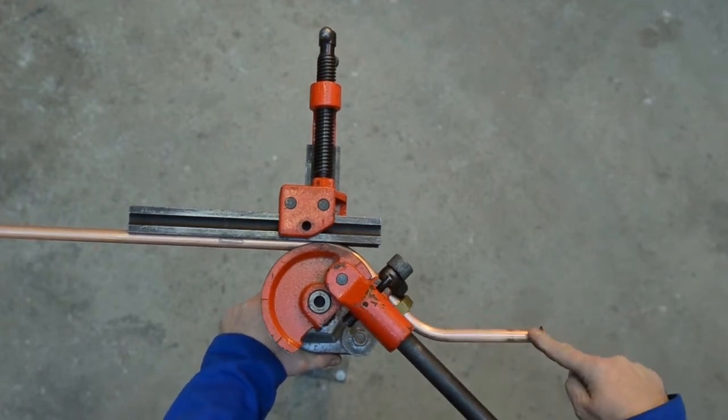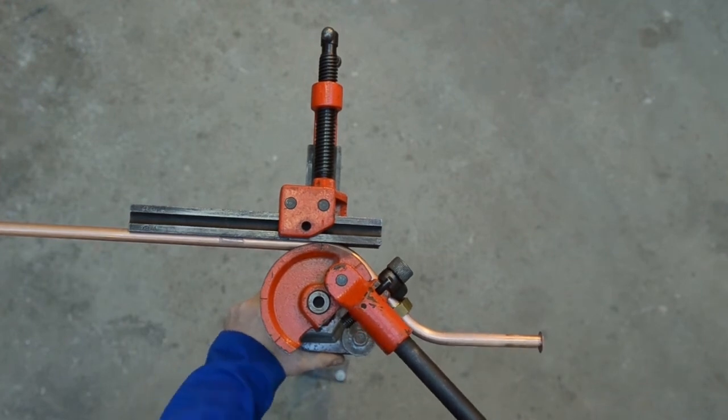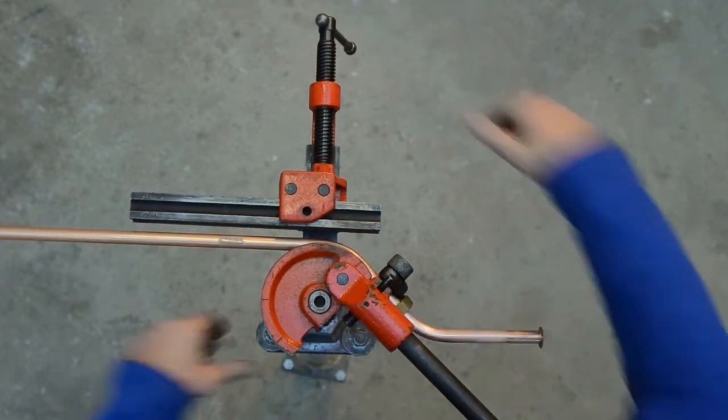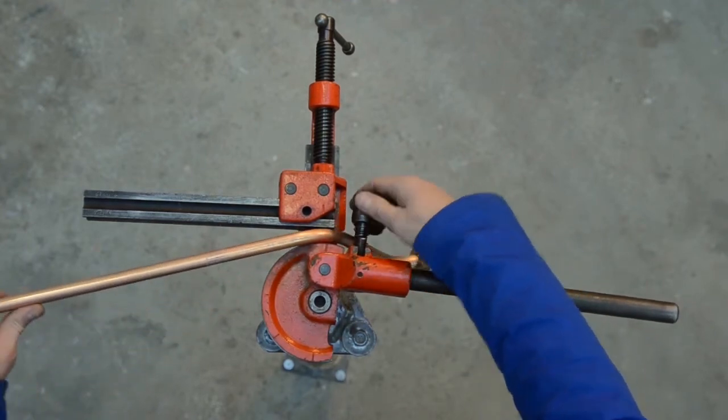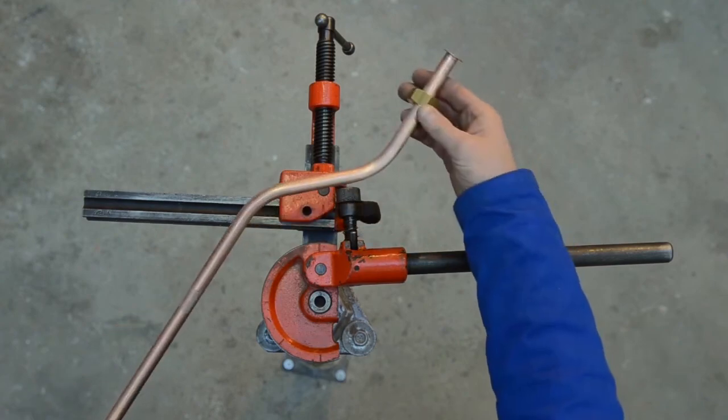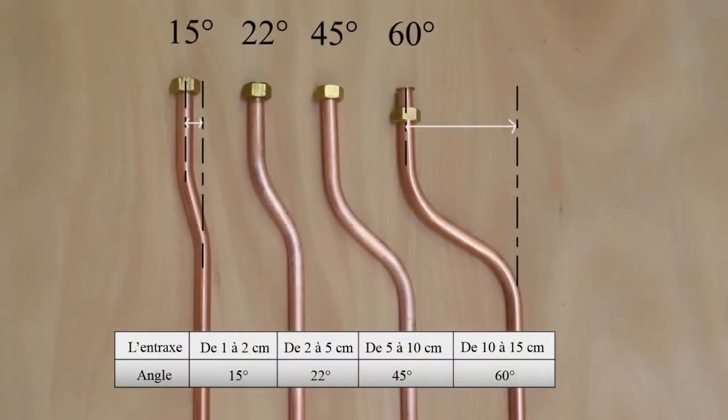La baïonnette est terminée si les deux axes sont parallèles. Les baïonnettes sont, comme dans notre exemple, généralement cintrées à 45 degrés, mais il est possible de choisir l'angle de cintrage en fonction de l'entraxe de la baïonnette.